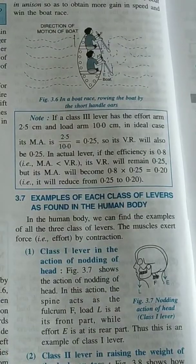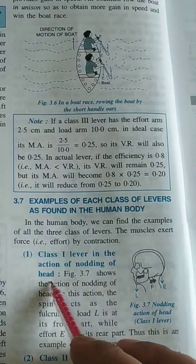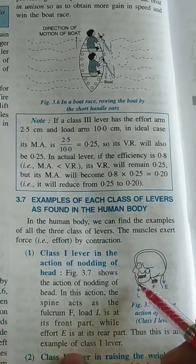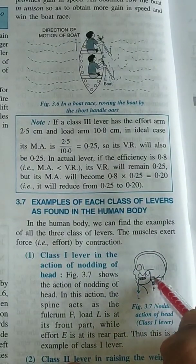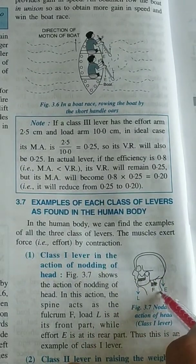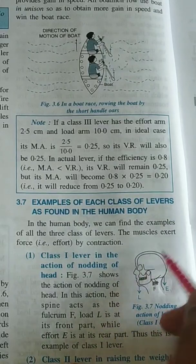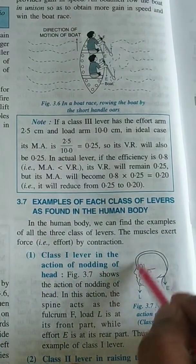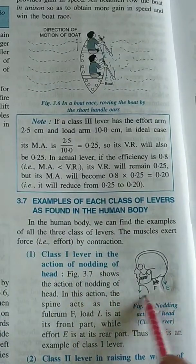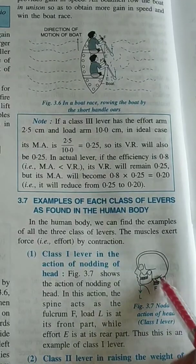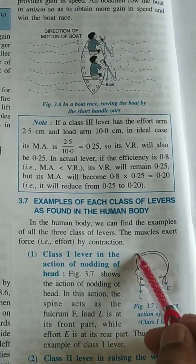Now let us look at examples of each class of lever as found in the human body. Class one lever: the action of nodding the head. The chin is the load which we move, the neck is the fulcrum, and with the help of the spine we apply effort — so the head load goes up or down. Fulcrum is in the middle, so this is the first class lever.